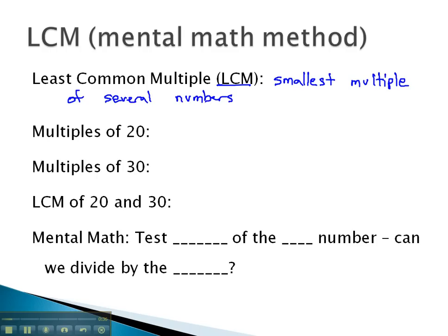For example, if we wanted to know the least common multiple of 20 and 30, one way we could do that would be to list out the multiples of 20. 20 times 1 is 20, 20 times 2 is 40, 20 times 3 is 60, 20 times 4 is 80, 20 times 5 is 100, 20 times 6 is 120, 20 times 7 is 140, and we could keep going.